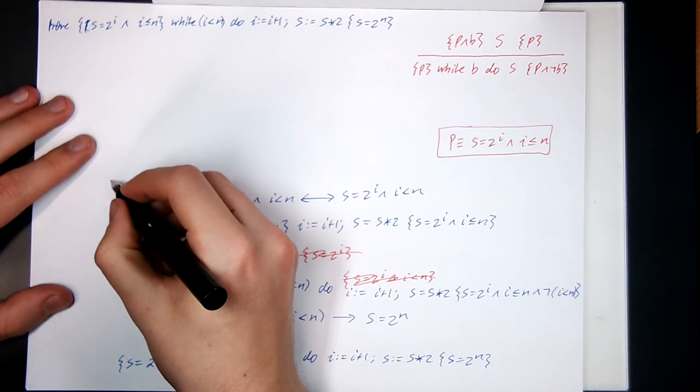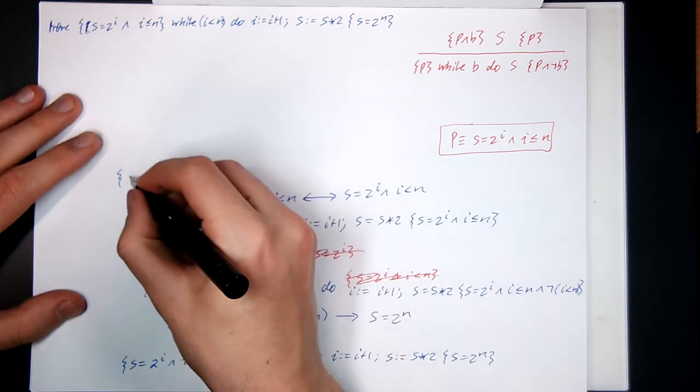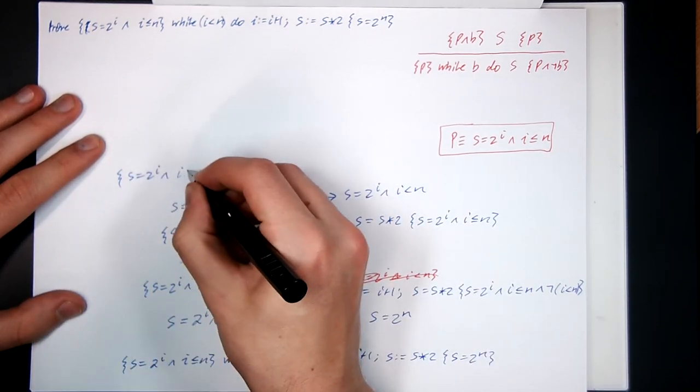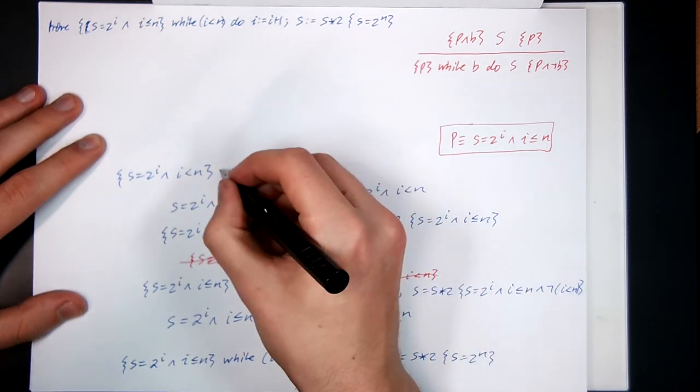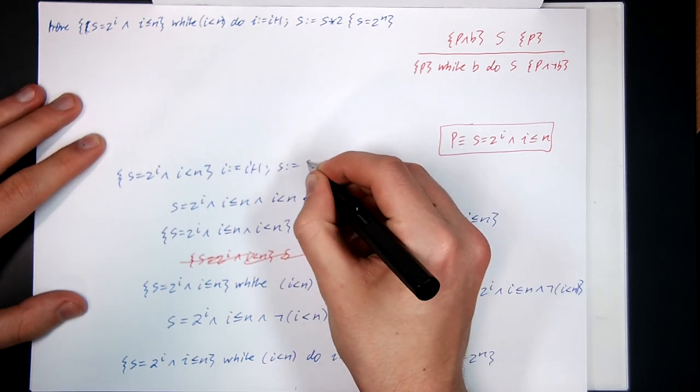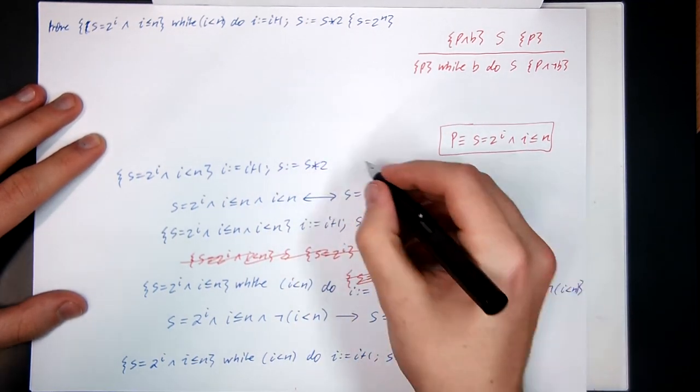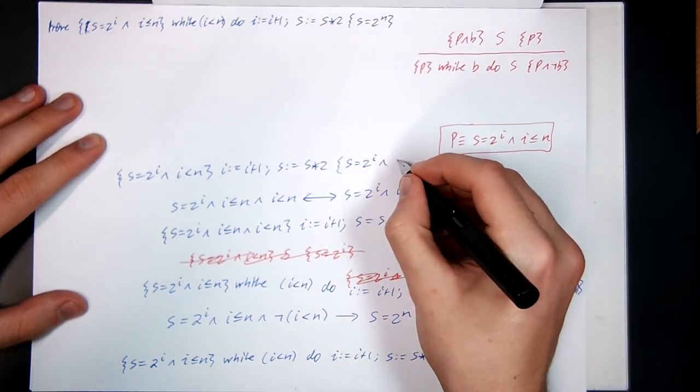So we can rewrite the problem in a little bit easier. What are we going to have? We're going to have just this term now. S equals 2 to the I and I strictly less than N as our precondition. The same code and the same post condition. And I less than N.